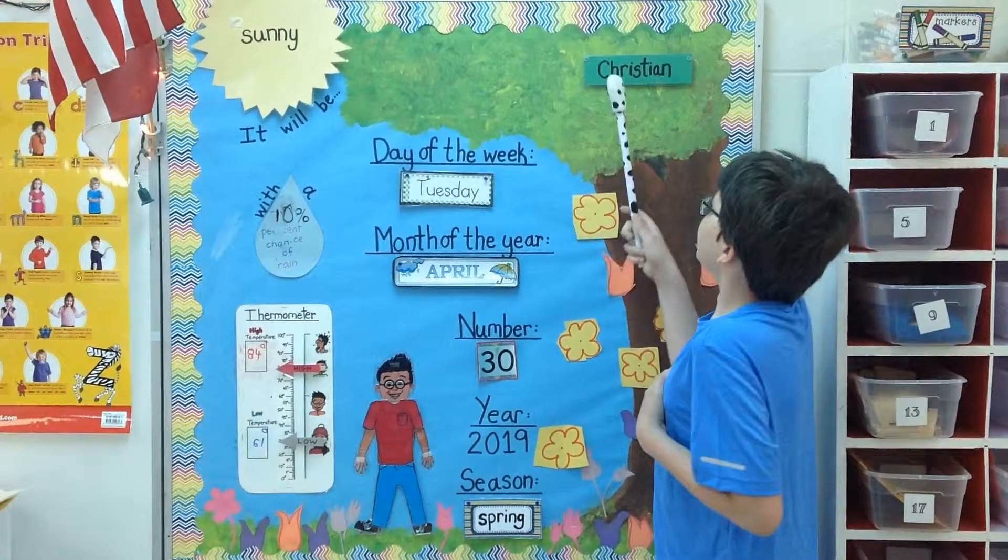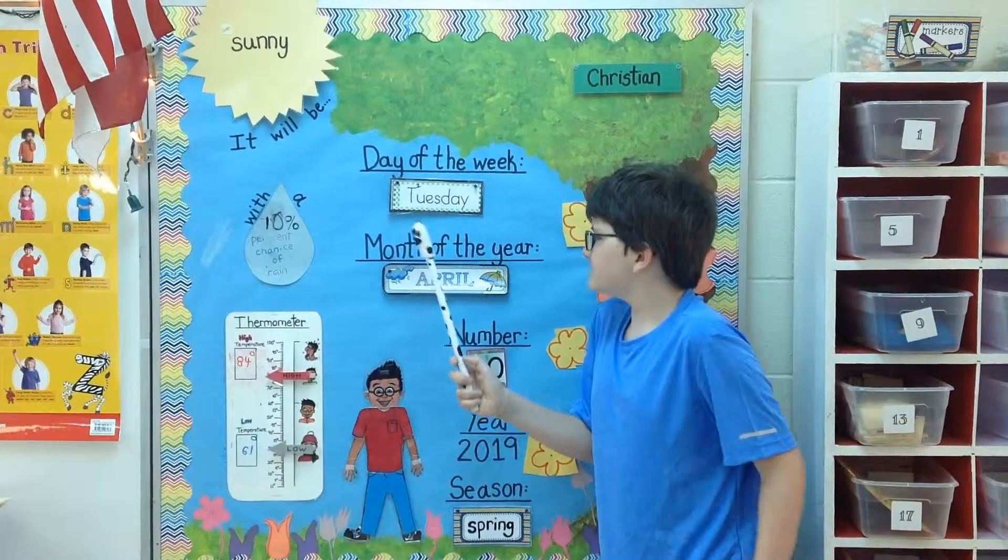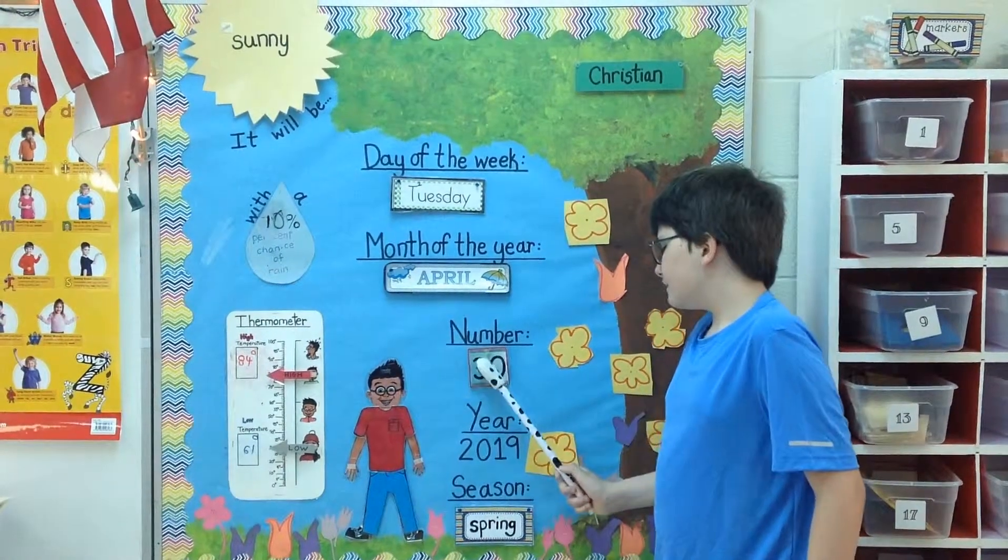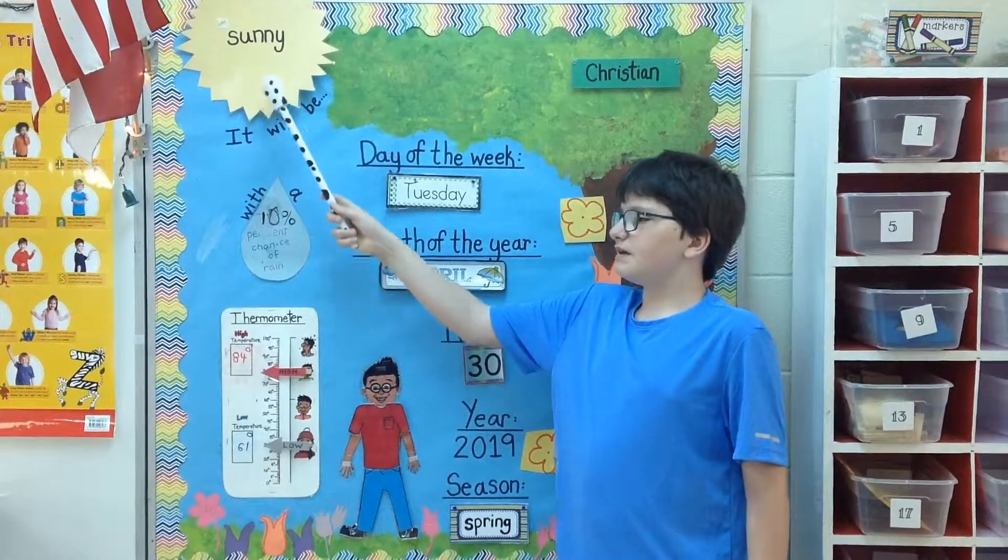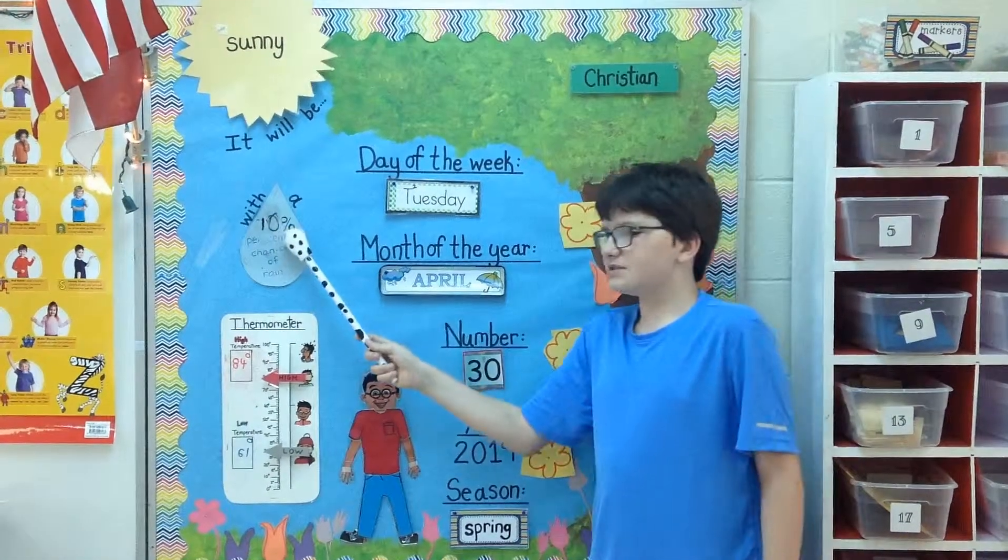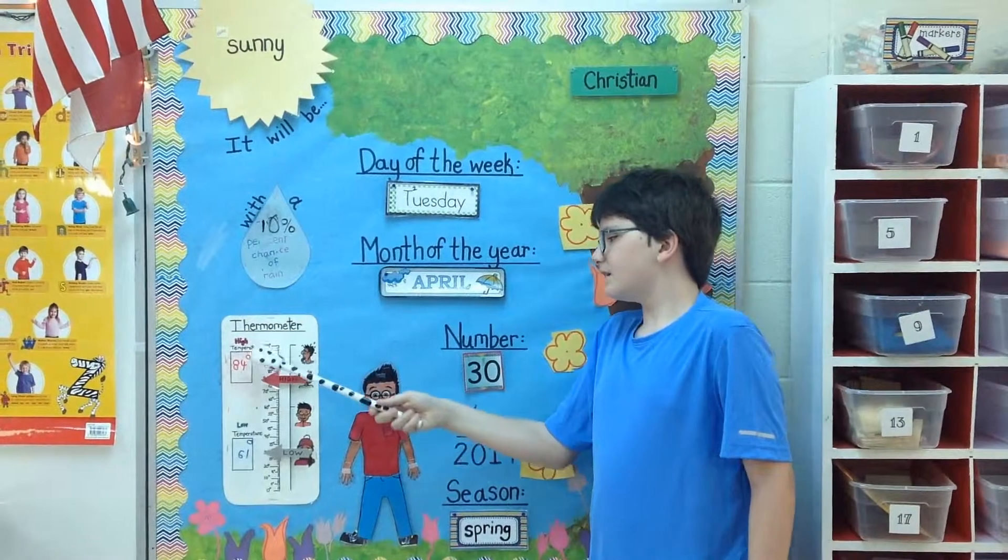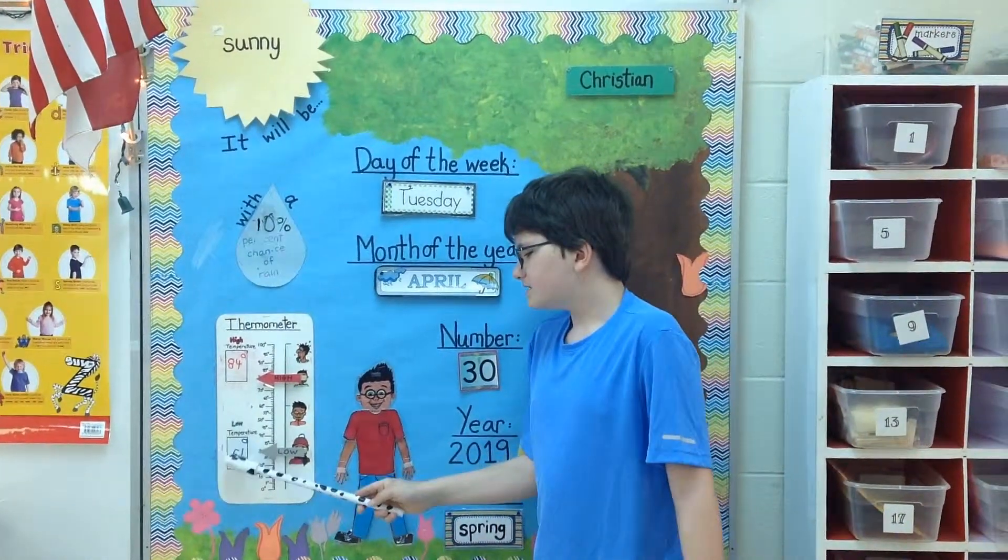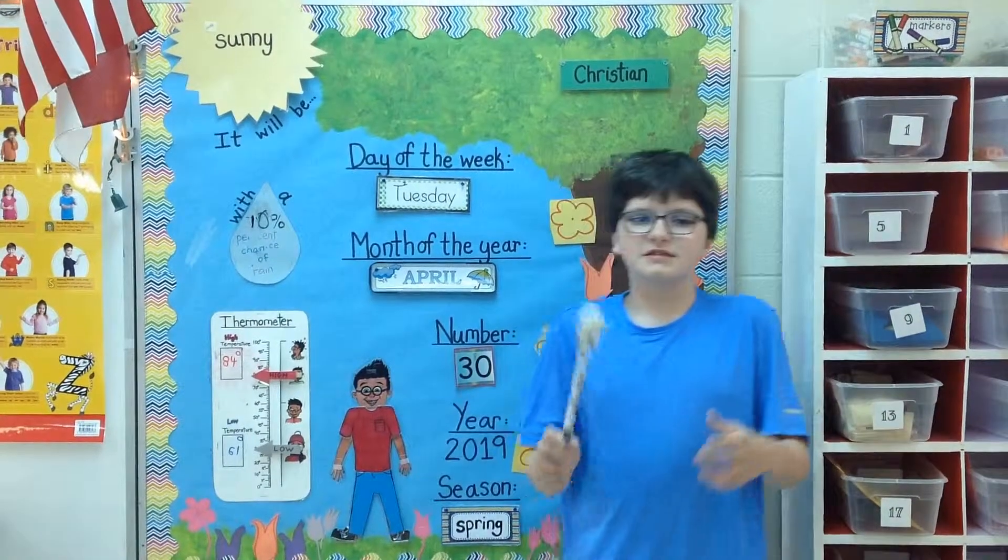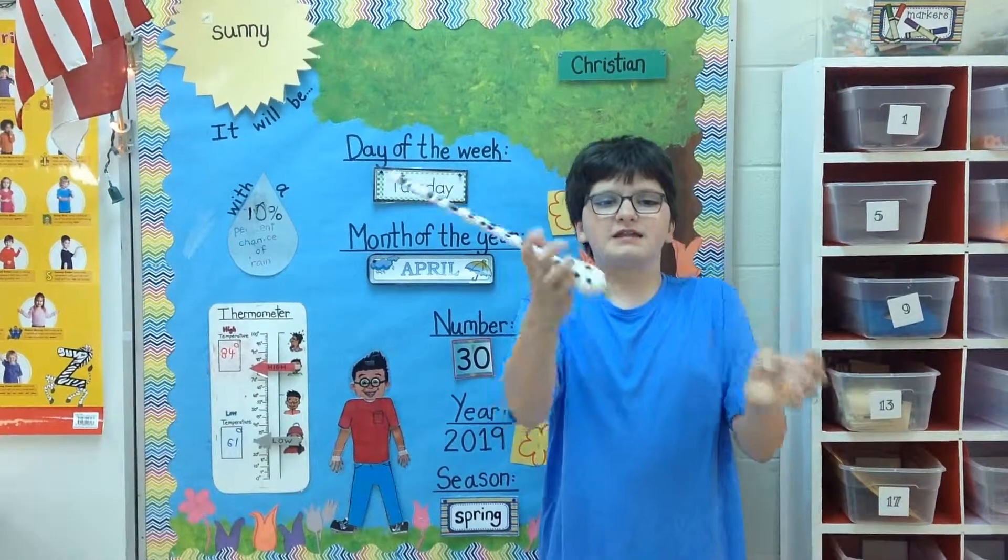Good morning, Rugby. My name is Christian. Today is Tuesday, April 30, 2019. It will be mostly sunny, with a 10% chance of rain, the high temperature 84 degrees, the low temperature 61 degrees. Thank you, and have a great day.